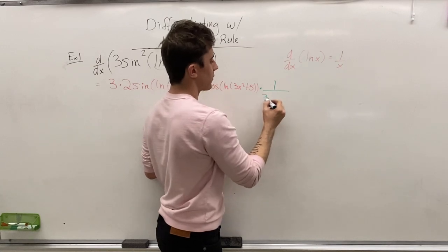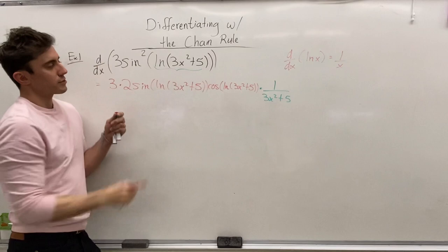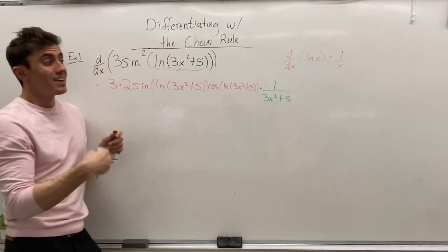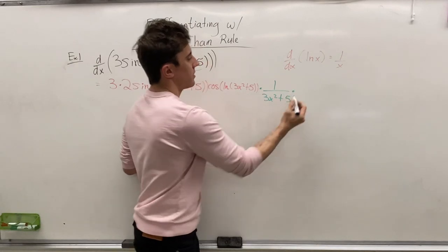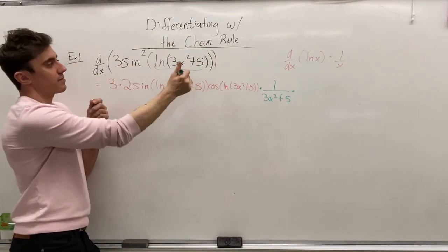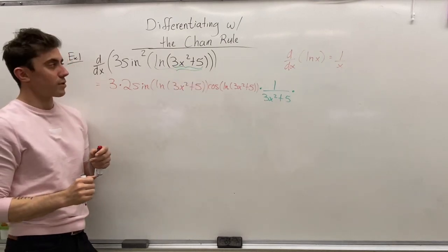The ln of x differentiates to 1 over x, and so the ln of a function differentiates to 1 over that entire function. So, the derivative of ln of 3x squared plus 5 is 1 over that entire 3x squared plus 5 times the derivative of 3x squared plus 5. The final little bit inside the last bracket.